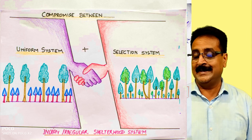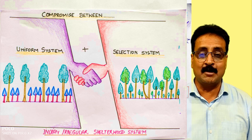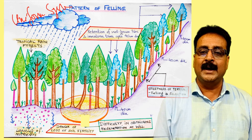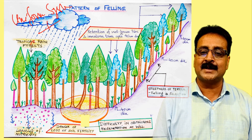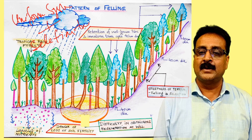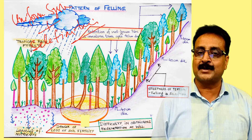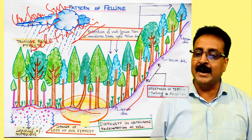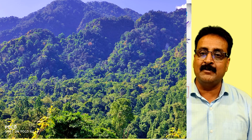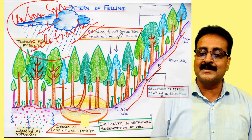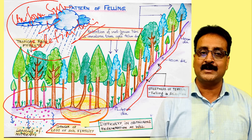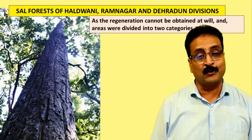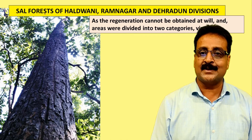There is a compromise between the uniform system and the selection system. In a compartment having both level terrain and steep terrain, we adopt a compromise between these two systems. On level terrain we retain trees of 40 centimeter diameter, while on steep terrain we go for selection felling due to fear of erosion.